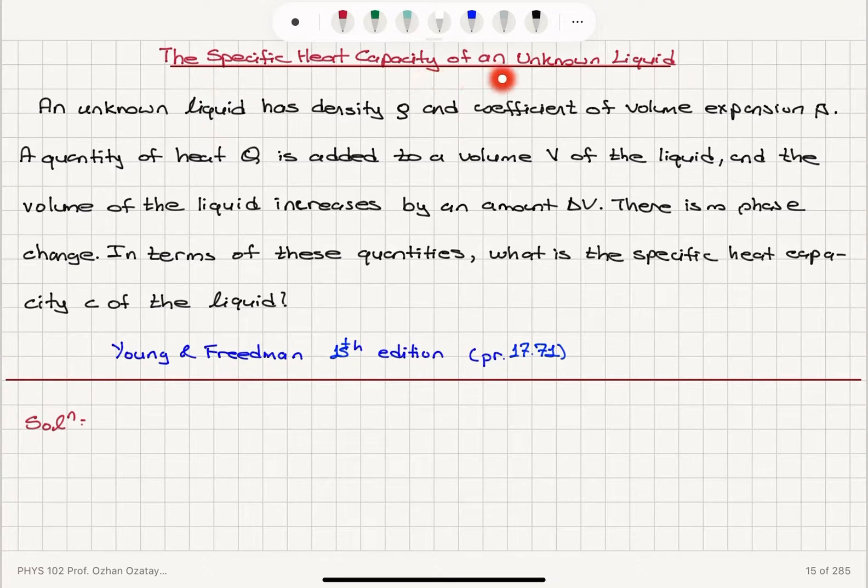The specific heat capacity of an unknown liquid. An unknown liquid has density ρ and coefficient of volume expansion β. A quantity of heat Q is added to a volume V of the liquid, and the volume of the liquid increases by an amount ΔV. There is no phase change. In terms of these quantities, what is the specific heat capacity C of the liquid?